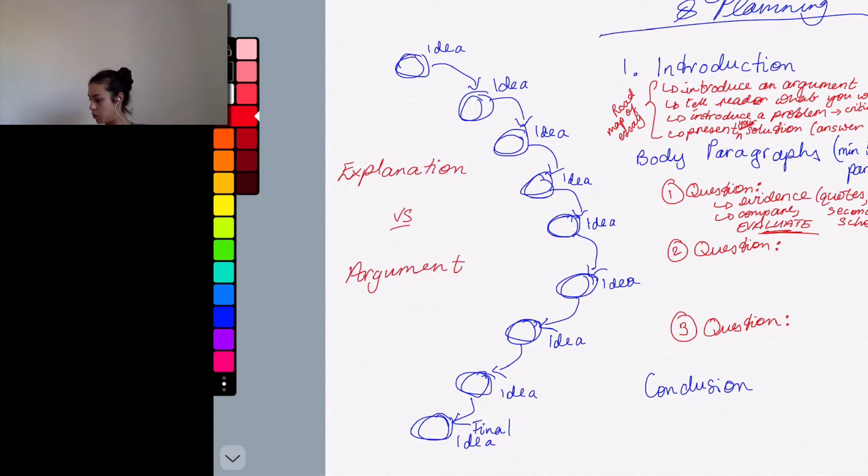Yeah, almost the definition of an explanation is that it's descriptive. It can look like an argument, but the main difference between an explanation and an argument is that an argument tries to persuade its reader to a different point of view. An explanation does not try to persuade you of anything.